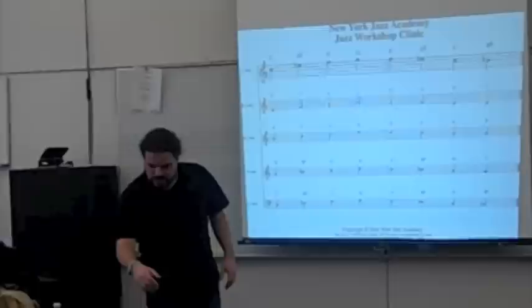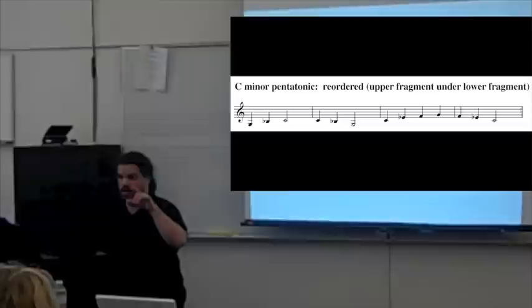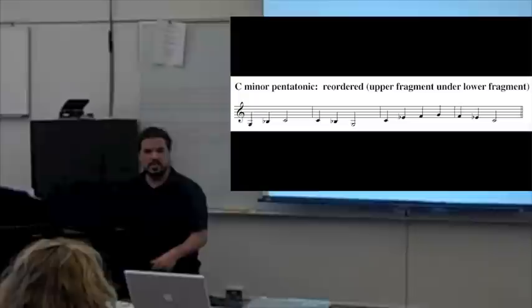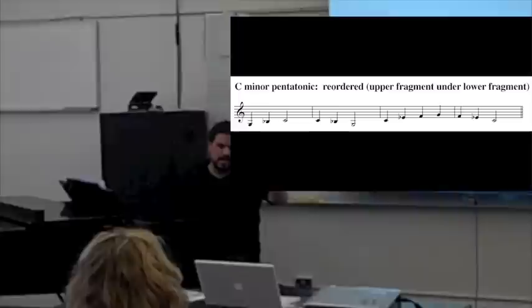We really have to get into the improvisation of things. And let's move ahead a little bit. So notice before, we looked at the pentatonic in terms of the lower fragment and the upper fragment. So we had C, E flat, F. That was on the other slide. And then G, B flat, C. Now what we're going to do is we're going to take that upper fragment and put it on the bottom.